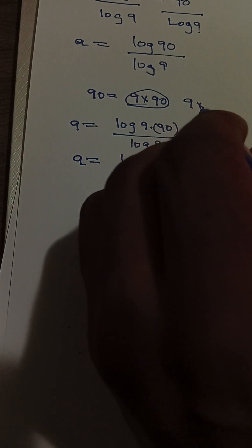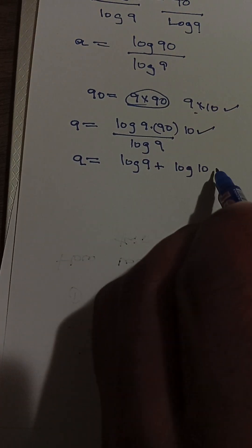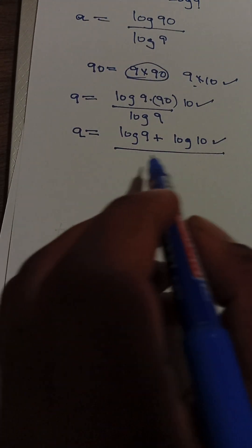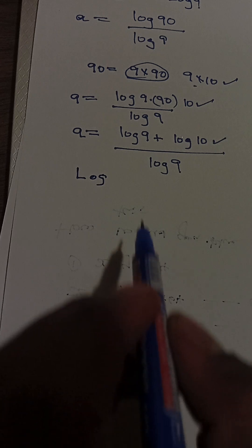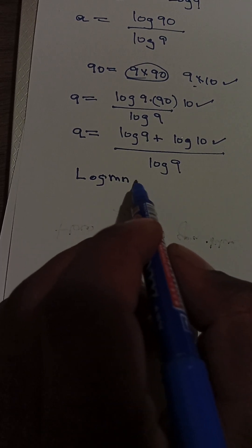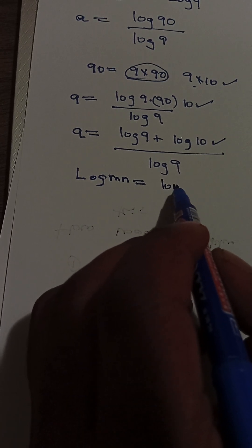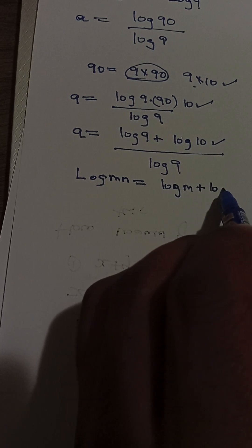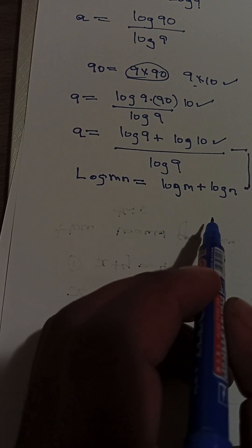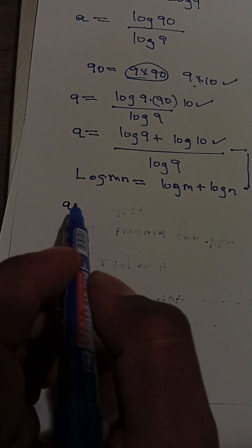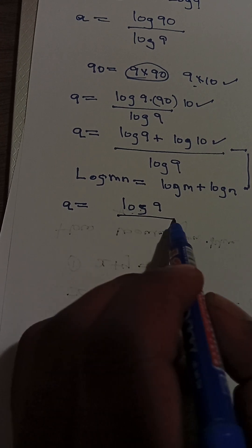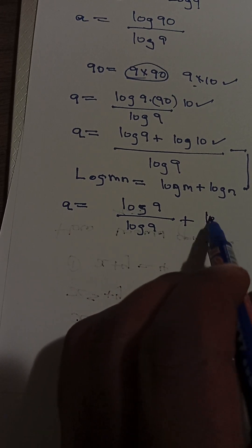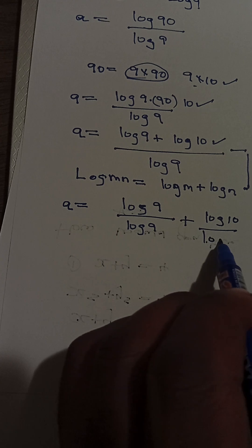So this is the same as a = [log(9) + log(10)] / log(9). Splitting the fraction: a = log(9)/log(9) + log(10)/log(9), which simplifies to a = 1 + log(10)/log(9).